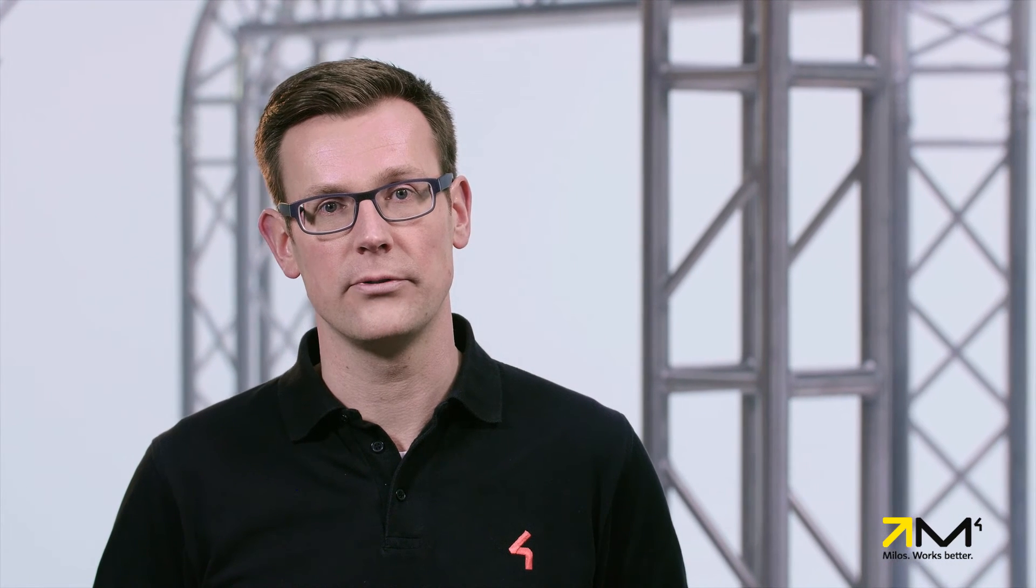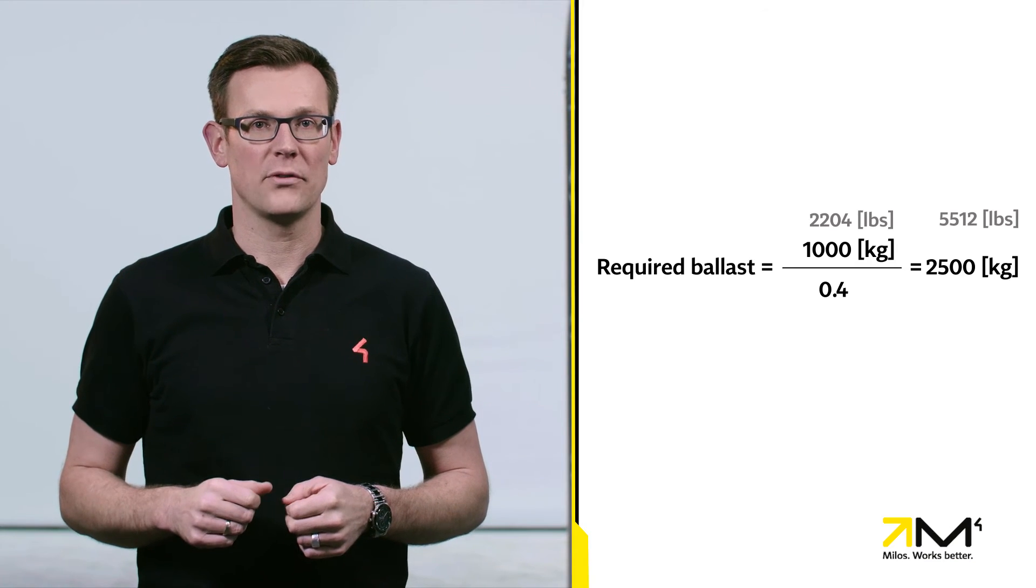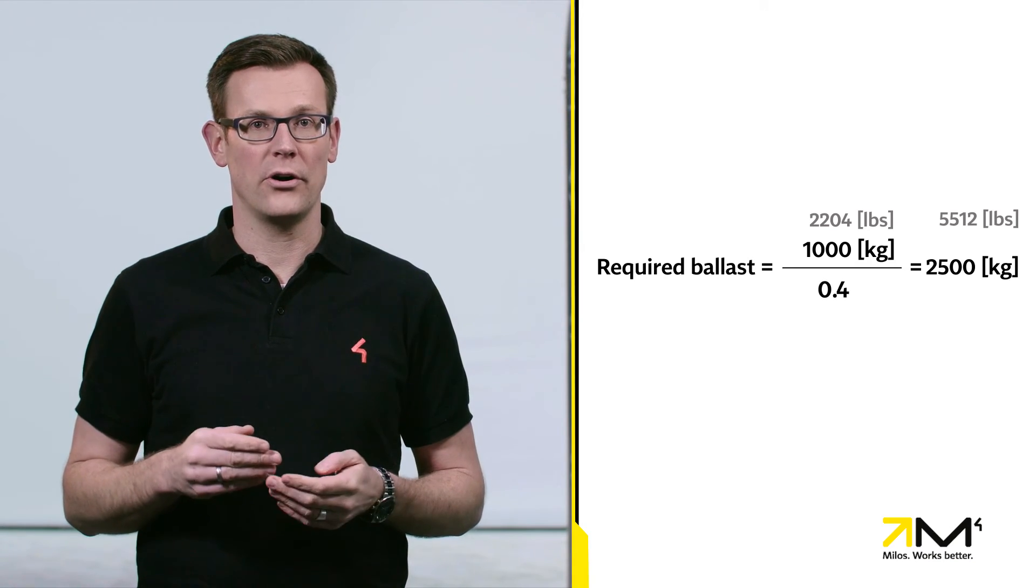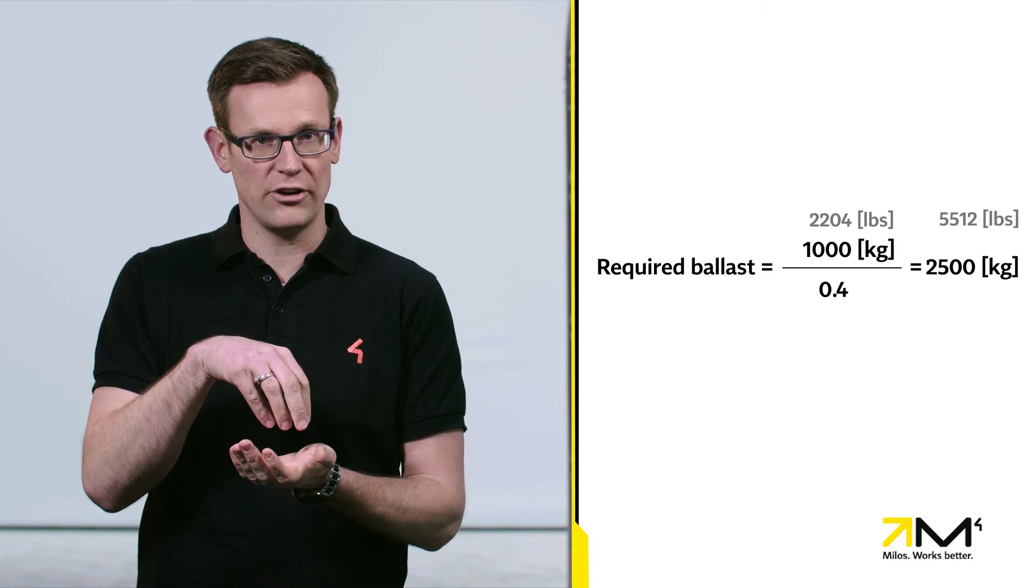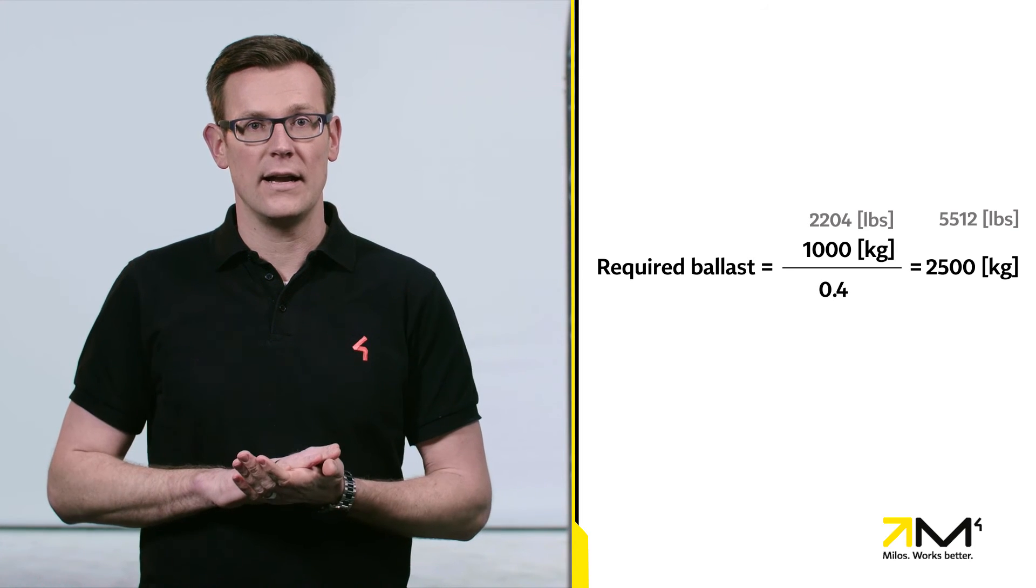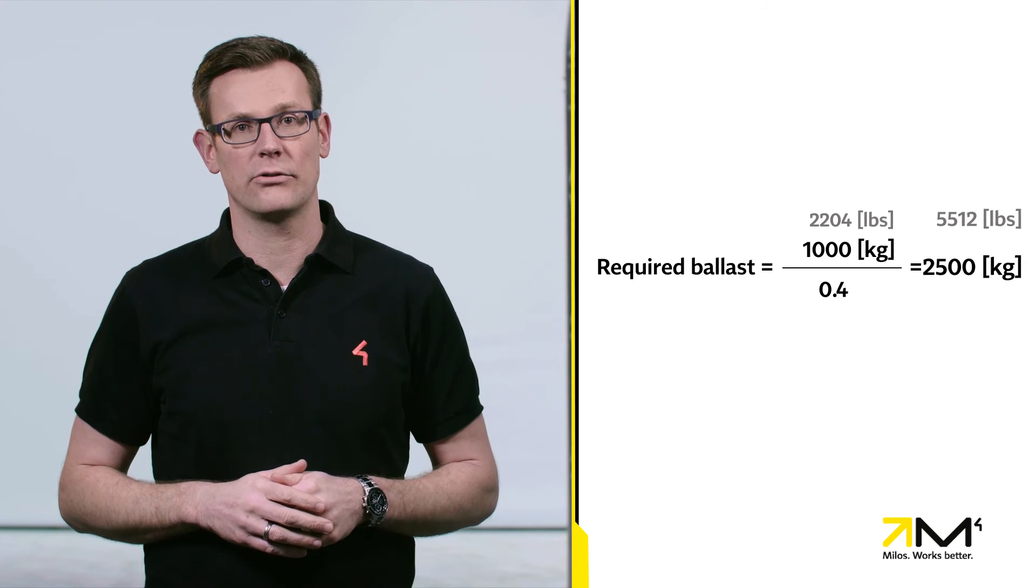As stated in our previous video, the screw jack needs to be embedded in or bolted to the wood. Otherwise, an unfavorable friction factor of 0.4 between the steel made screw jack and the wood applies, and the ballast increases to 2,500 kg.